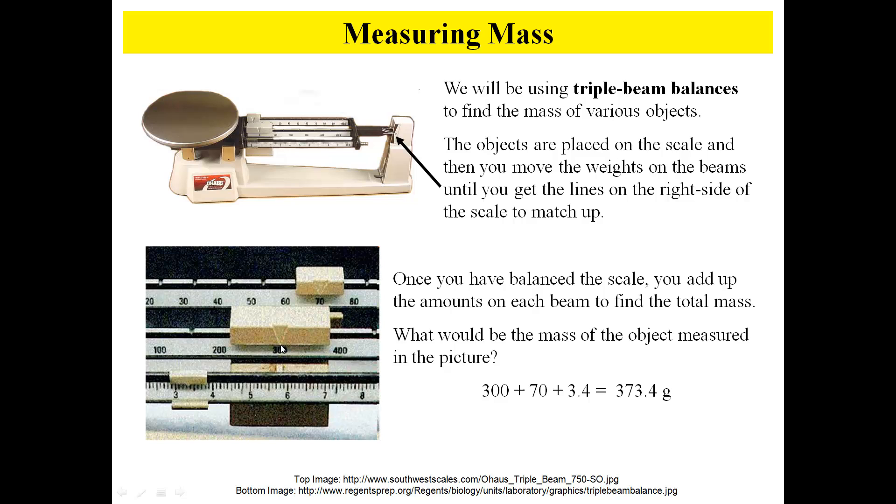It's a pretty easy thing to just measure what the mass would be. It looks like the arrow's pointing to 300. So we've got 300 grams plus 70. Here's our 70 grams here. And this one looks like about 3.4 grams. Then our total would be 300 plus 70 plus 3.4 equals 373.4 grams.